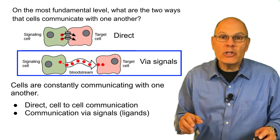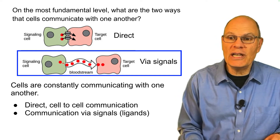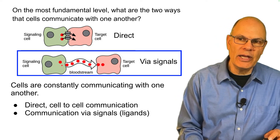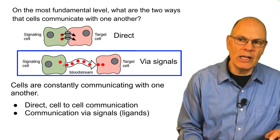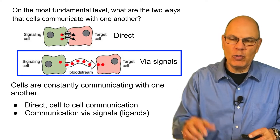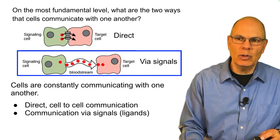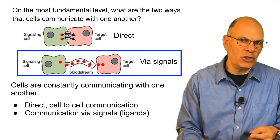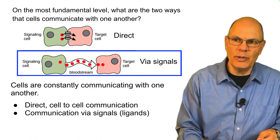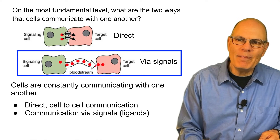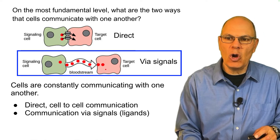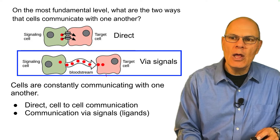There's also communication that happens through signals. A cell produces and secretes a molecule into the bloodstream or into the extracellular fluid, and that message is picked up by a target cell.